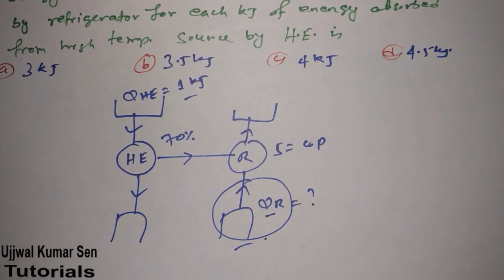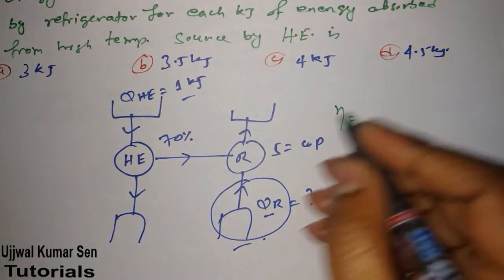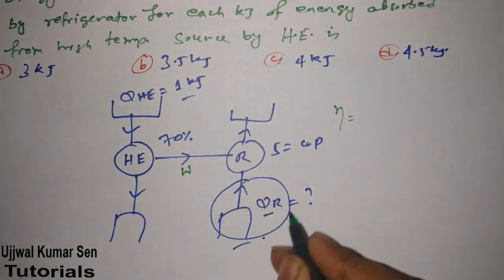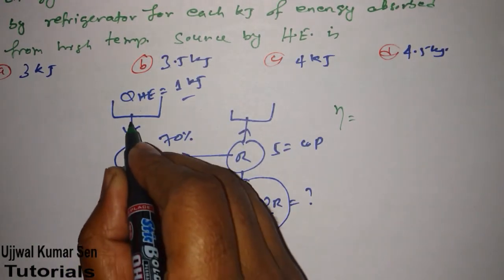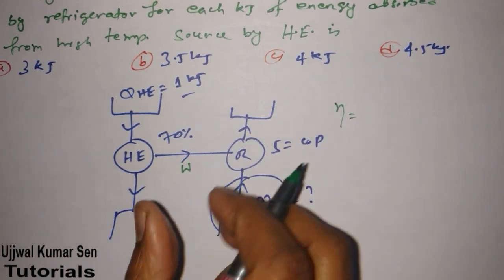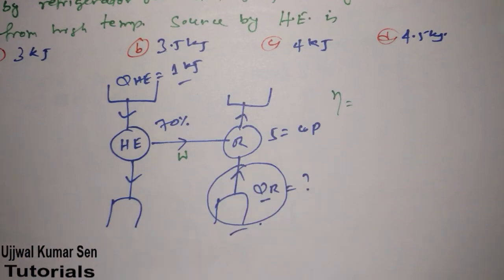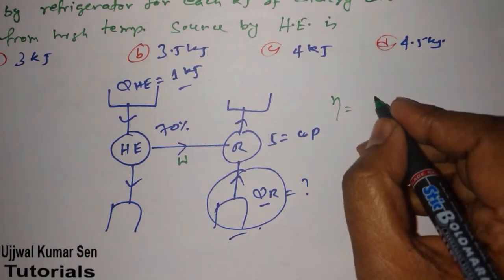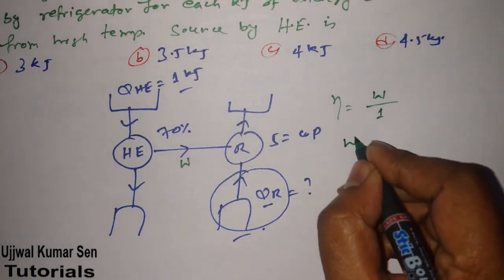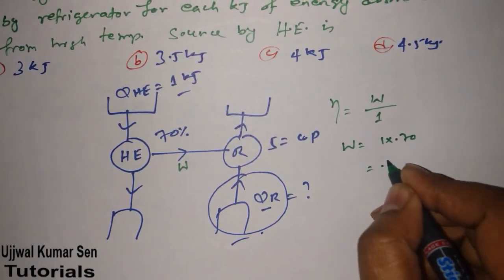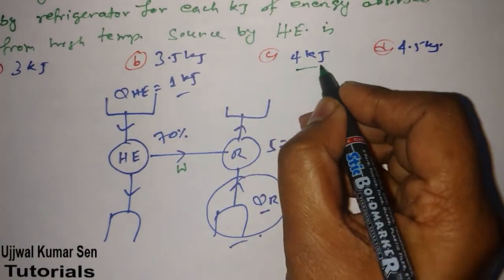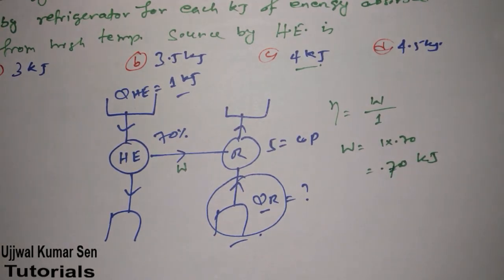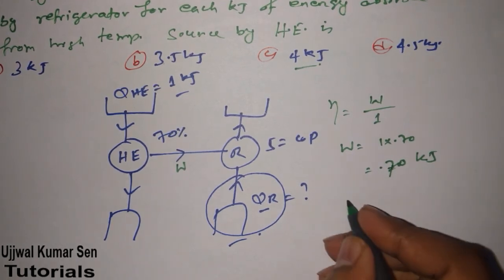We know that efficiency equals output divided by input. The output work from the heat engine is given to the refrigerator. So efficiency = W / Q_H, which gives W = 0.70 × 1 kJ = 0.70 kJ.